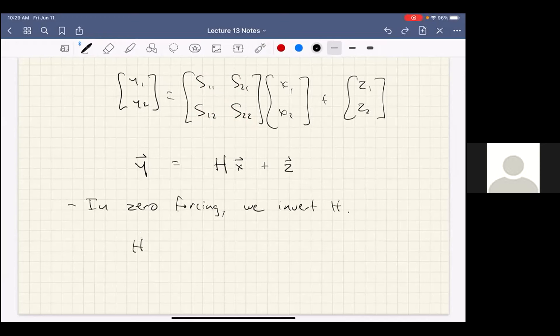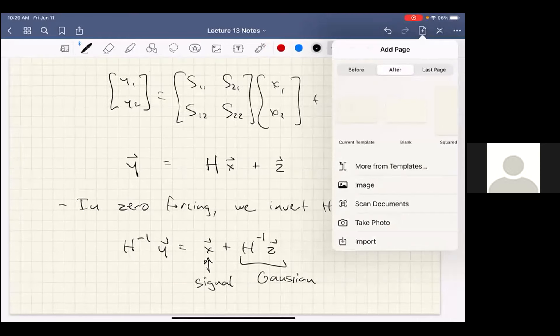So basically what happens there is the following. I can define my terms here. So this will be the vector y equals the matrix I'm going to call that H, vector x plus the vector z. So in zero forcing, we invert H. In other words, we multiply on the left by H inverse. H will generally be invertible because at least in this scheme, the cross receivers will be further away than your true receivers. So these elements will be larger than those, so this matrix should be invertible. This is the linear combination of Gaussian noises, so this will still be Gaussian.